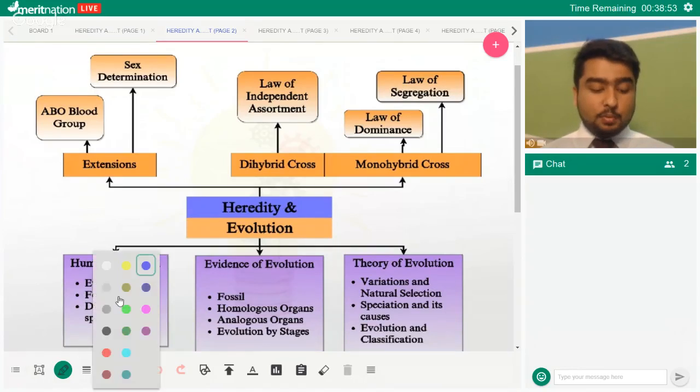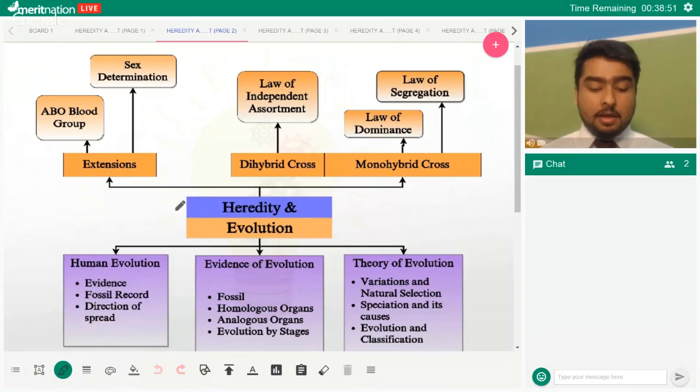So the chapter is named heredity and evolution. The first point comes to heredity. So what's heredity? The progeny has the same characteristics as the parent, right. So that will be studied under the branch called heredity - transmission of characteristics from the parent to the progeny. Next we come to evolution.